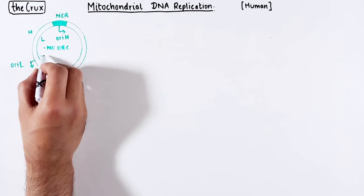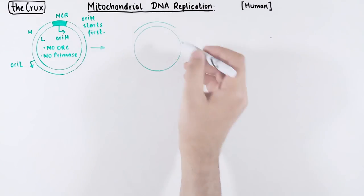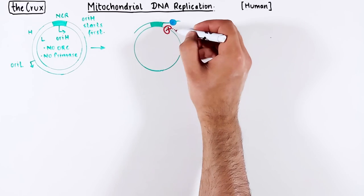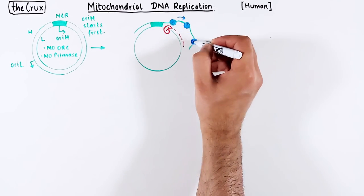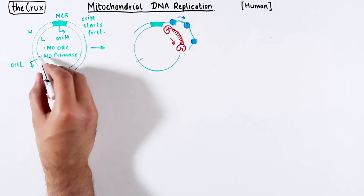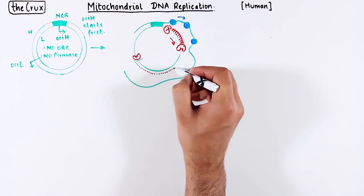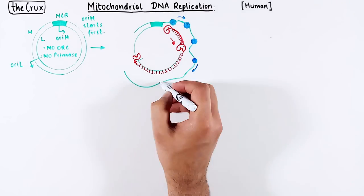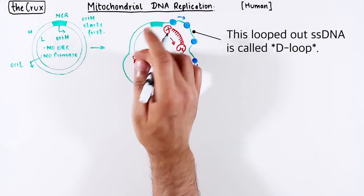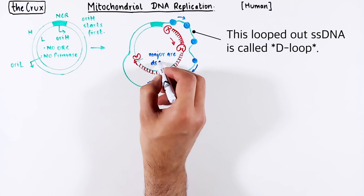The replication starts at OriH, where Twinkle and DNA polymerase are recruited. Twinkle unwinds the DNA while moving on the H strand, and simultaneously DNA polymerase uses the L strand to make a copy. Twinkle and DNA polymerase continue towards the direction of OriL and eventually pass over it — this is what it means to be the major arc, which gets replicated first.